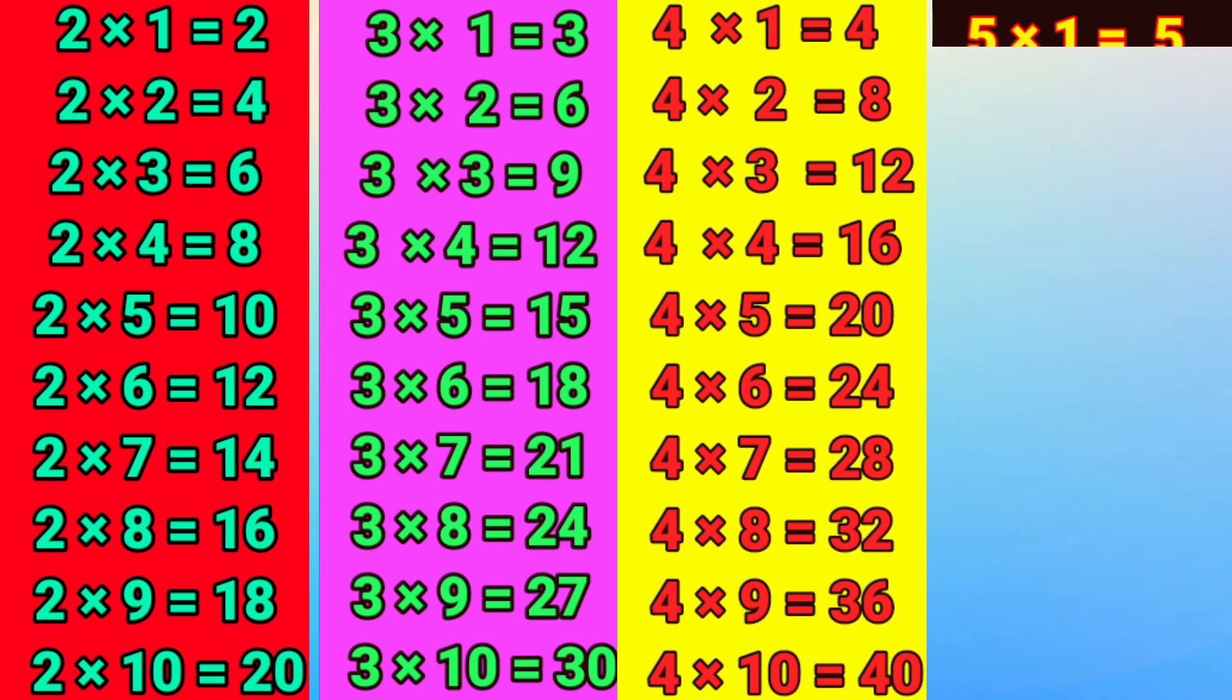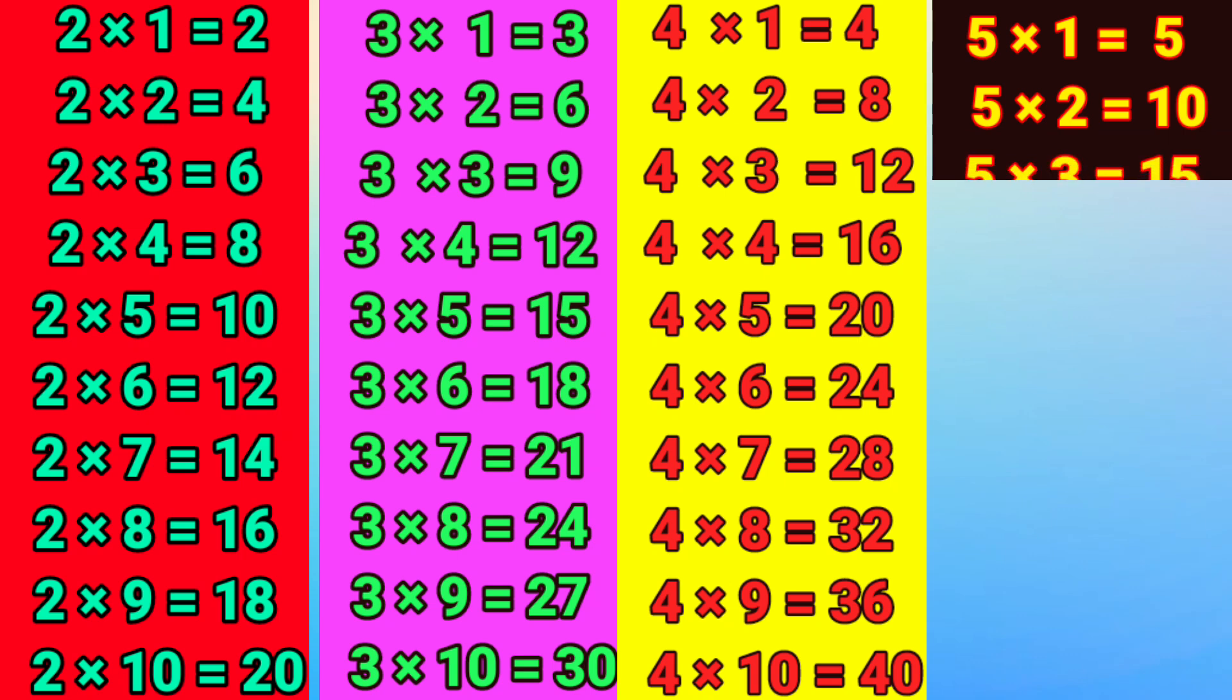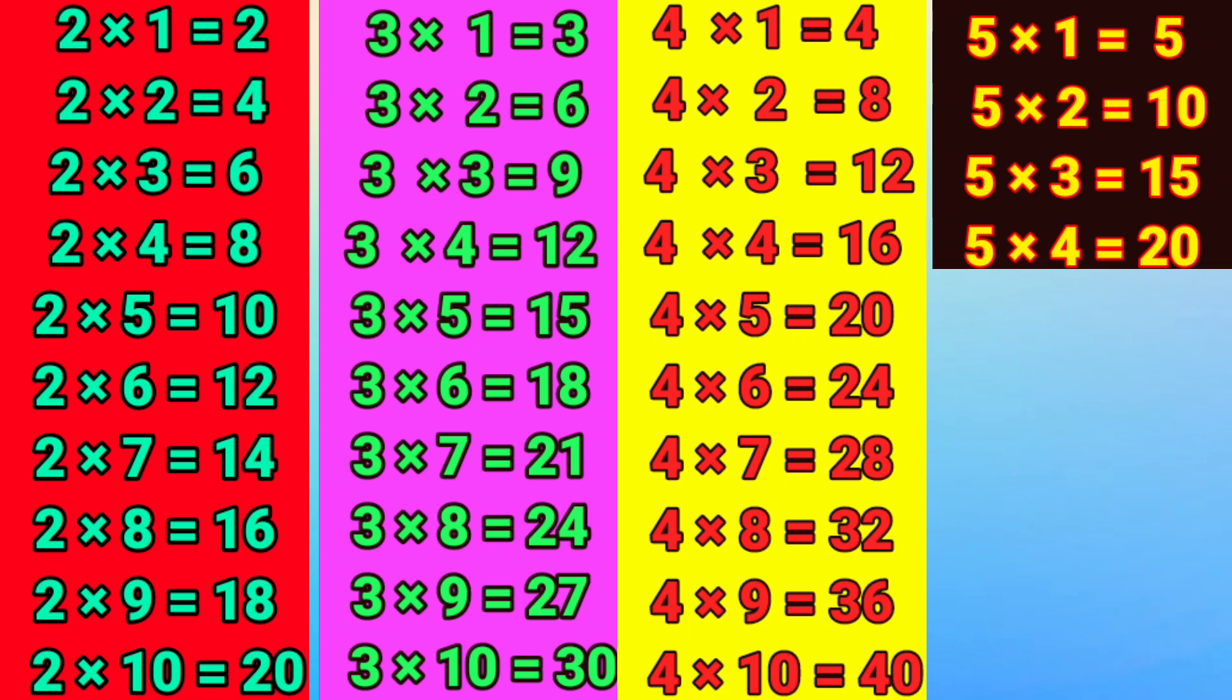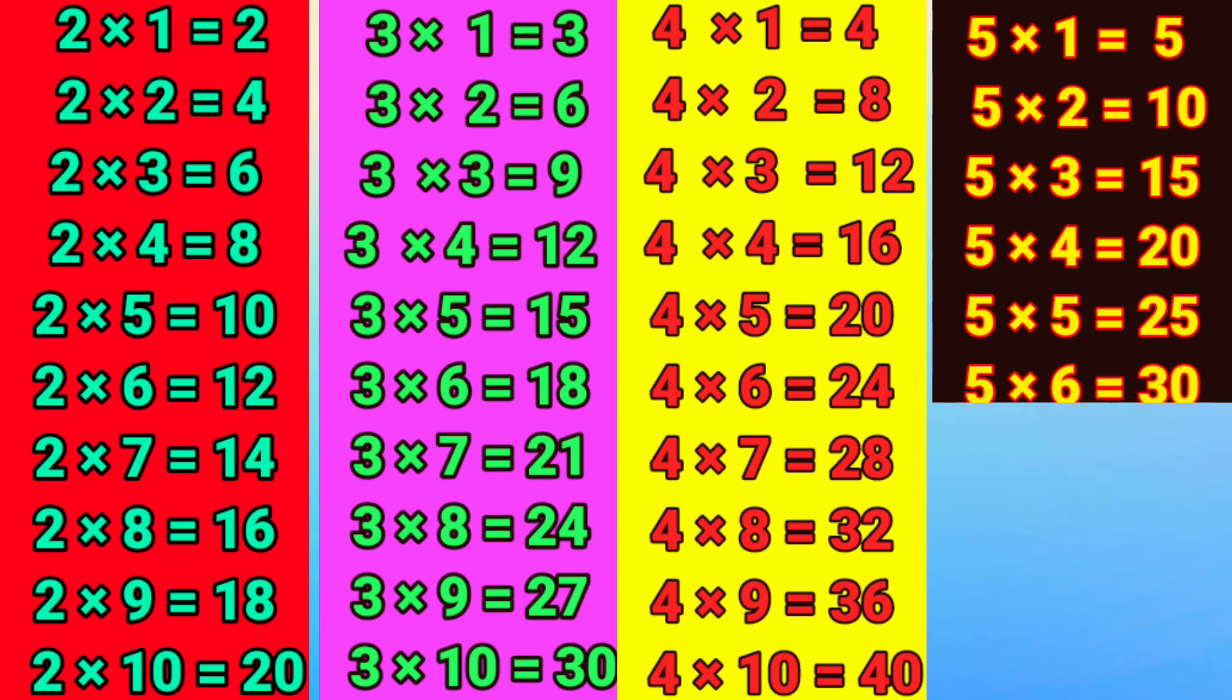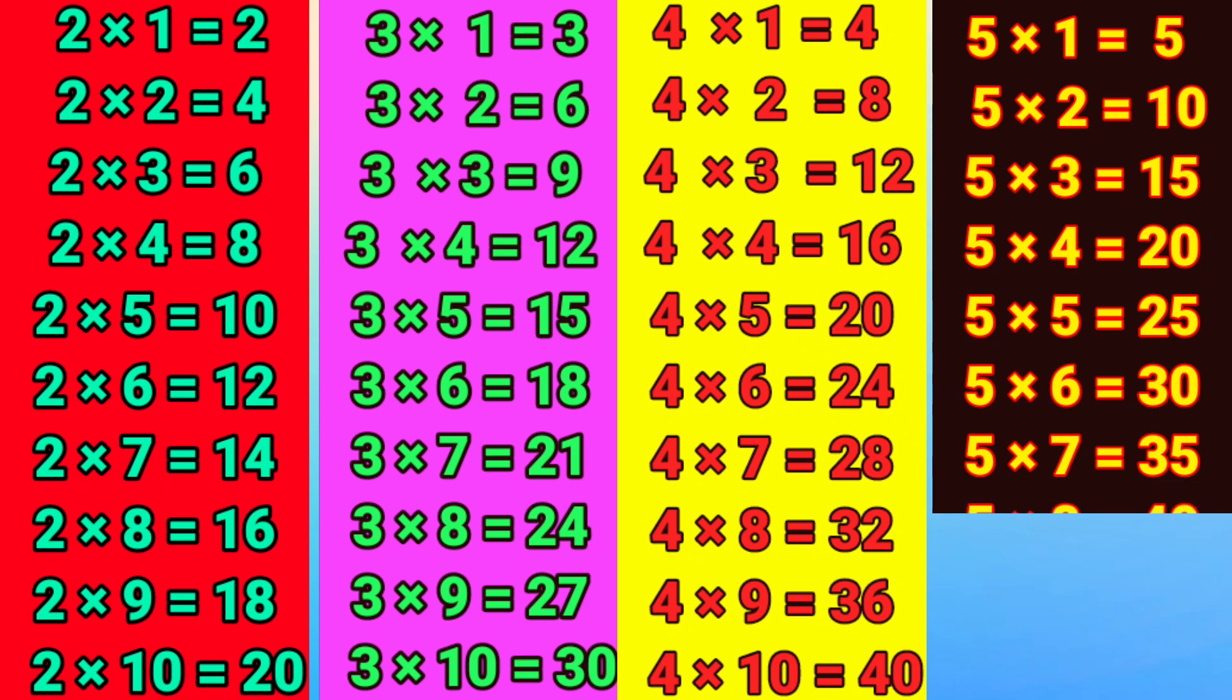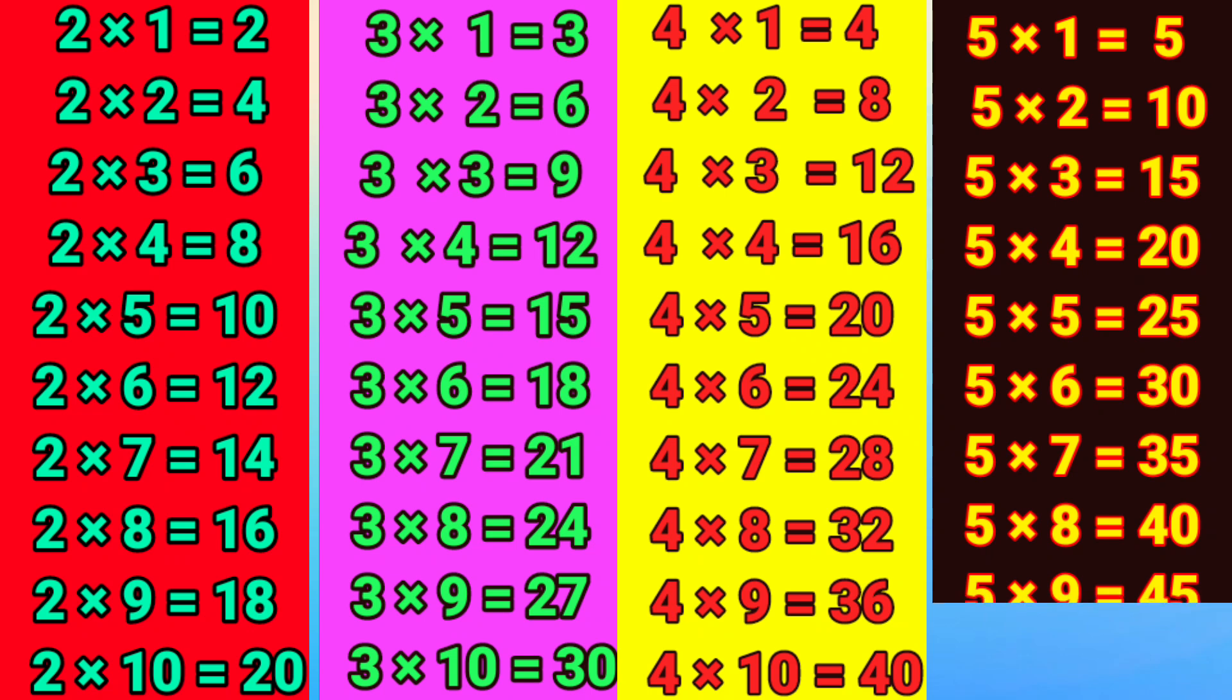5 times 1 is 5, 5 times 2 is 10, 5 times 3 is 15, 5 times 4 is 20, 5 times 5 is 25, 5 times 6 is 30, 5 times 7 is 35, 5 times 8 is 40, 5 times 9 is 45, 5 times 10 is 50.